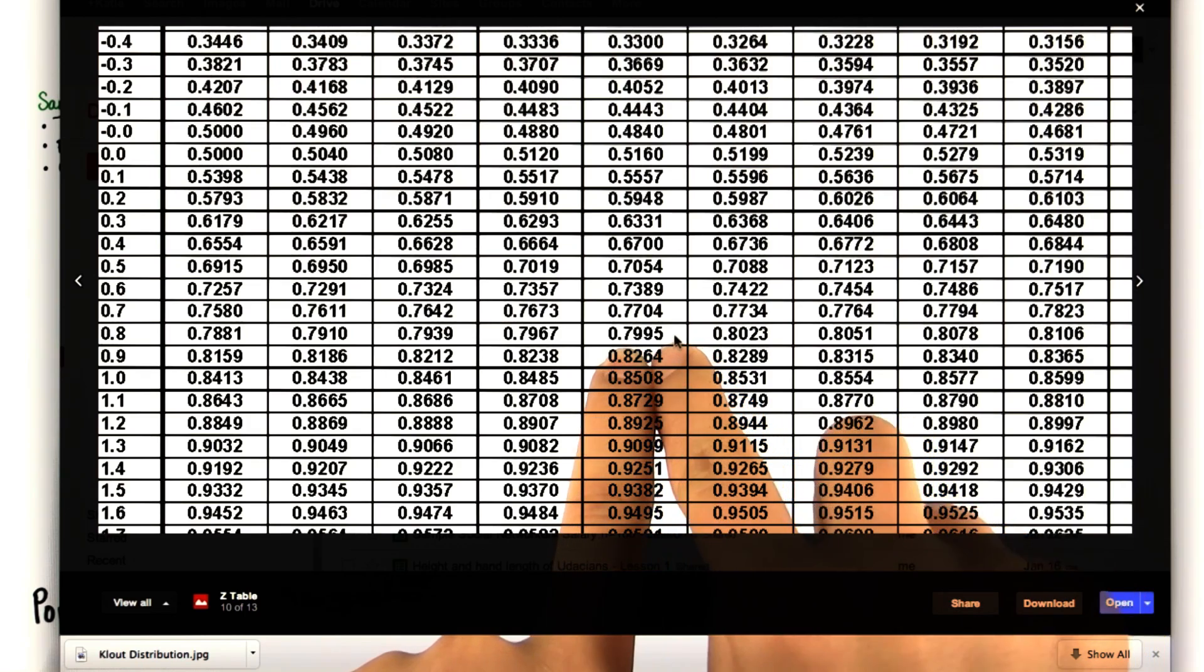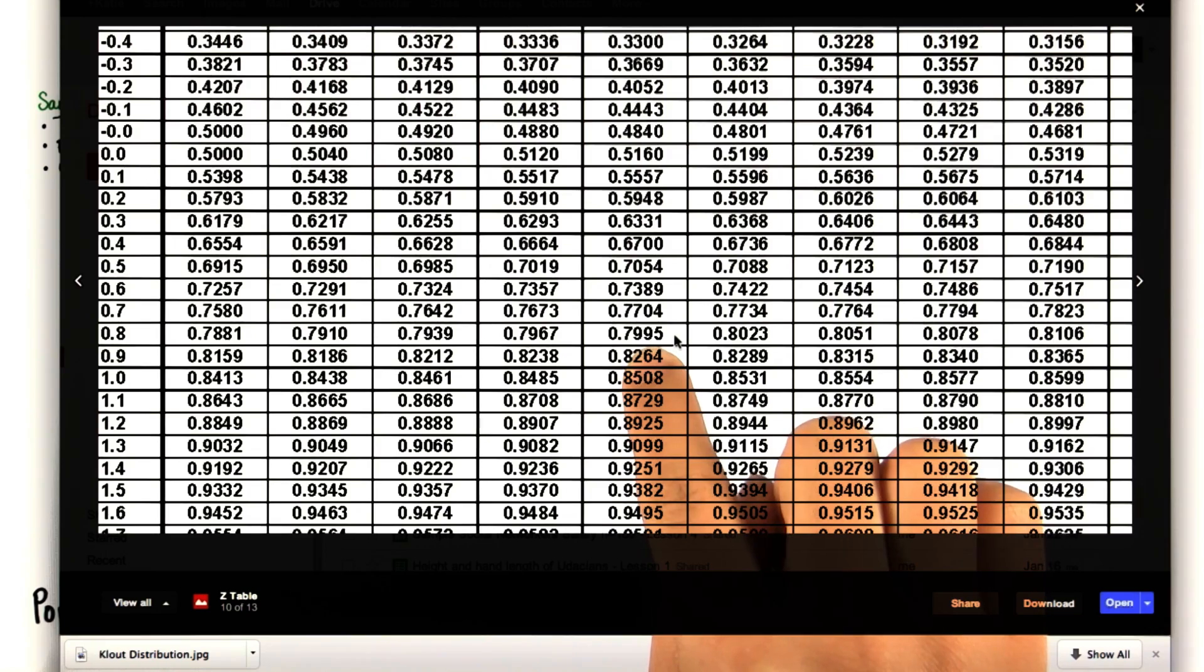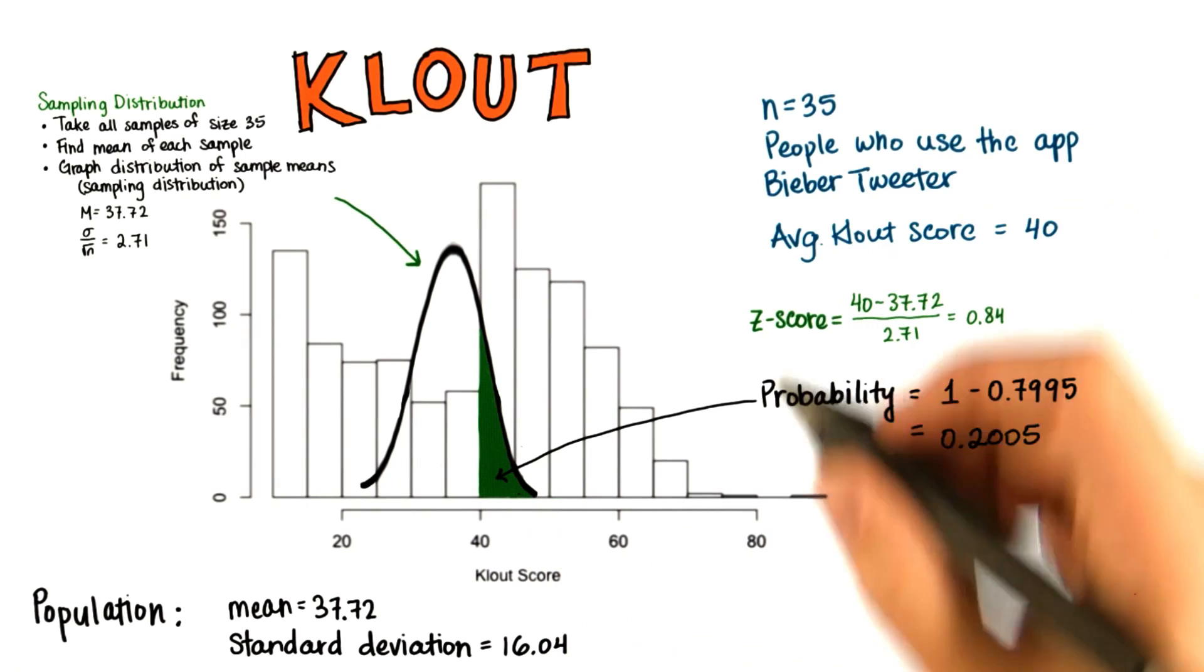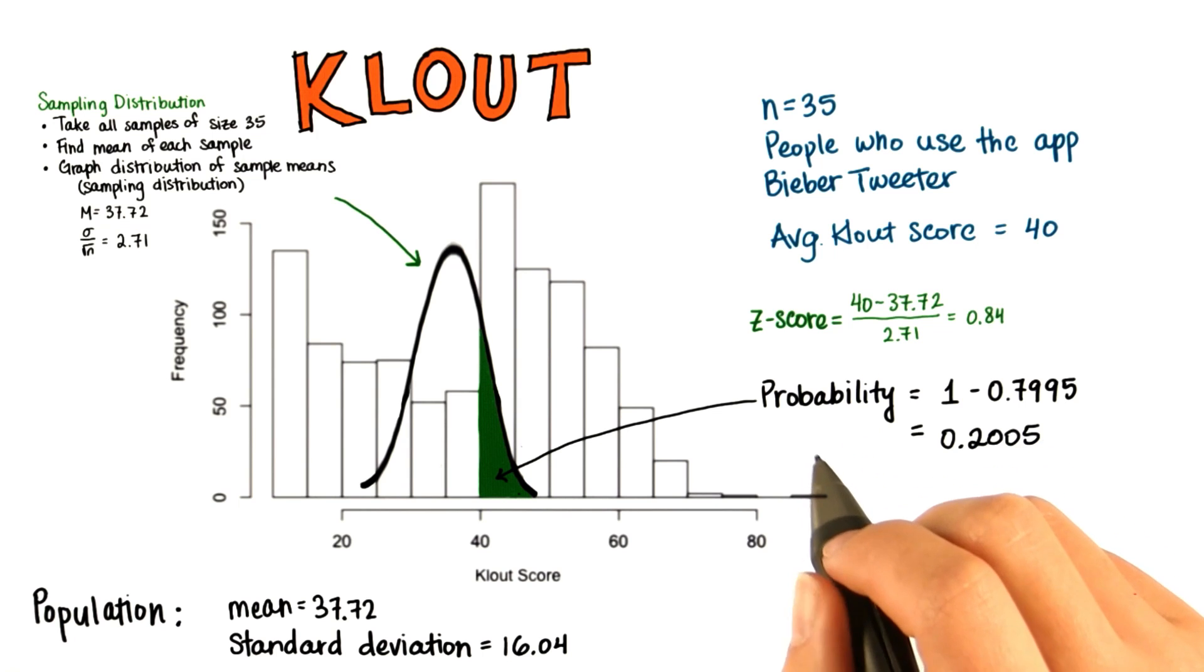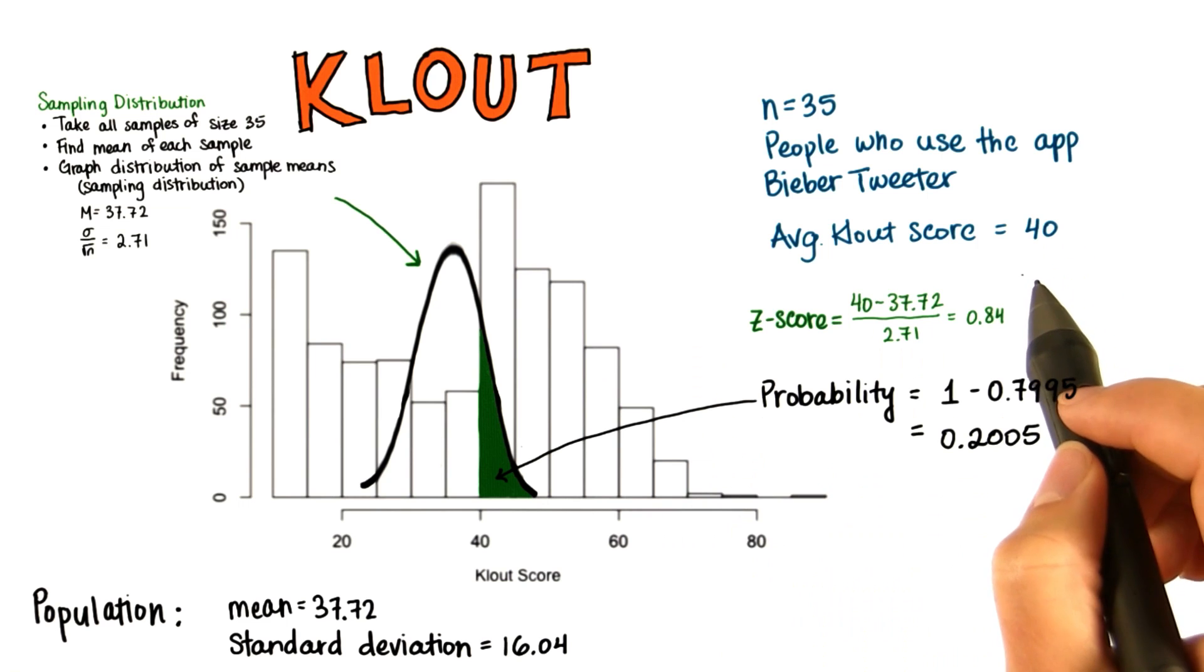So the probability of getting greater than a mean of 40 is 1 minus 0.7995, which is only about 0.2. So it's somewhat unlikely to have randomly drawn a sample from the whole clout population with a mean of 40.